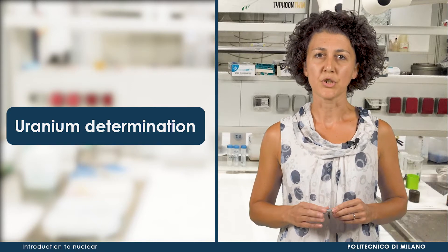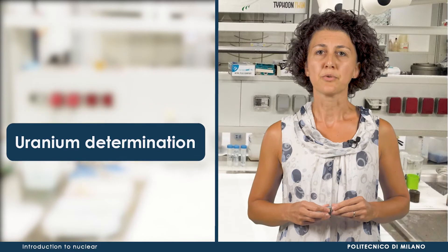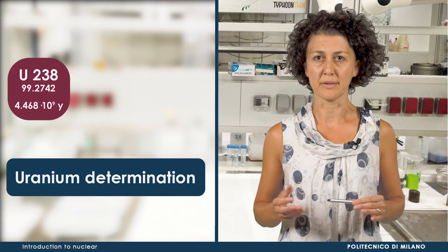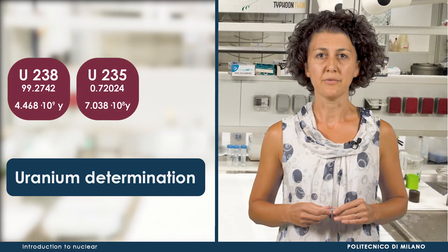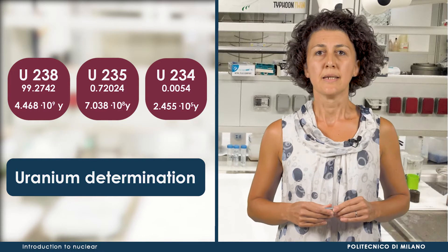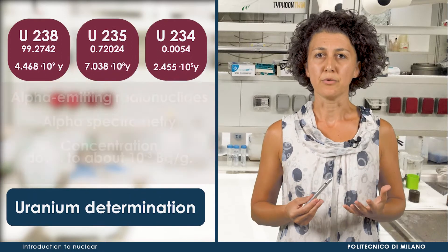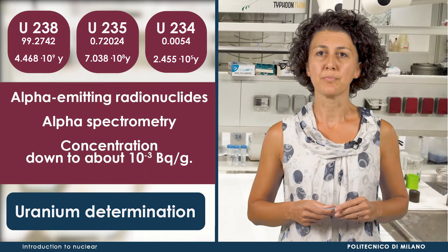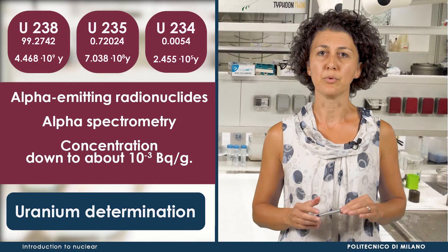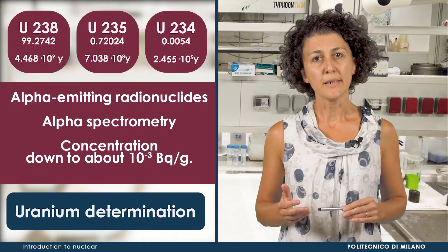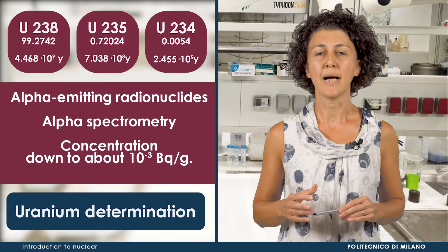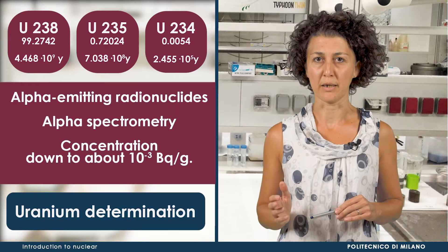Besides isotopes artificially produced, uranium naturally exists as uranium-238, the most abundant isotope, uranium-235 and uranium-234 as traces. Since they are all alpha-emitting radionuclides, they can be measured by a radiometric method, such as alpha-spectrometry, after proper sample manipulation. This technique allows to quantitatively measure their concentration down to about 10 to the minus 3 becquerel per gram.